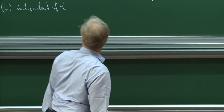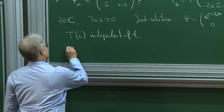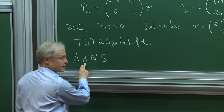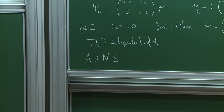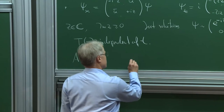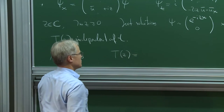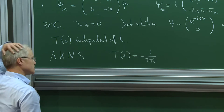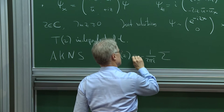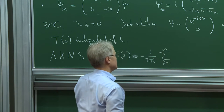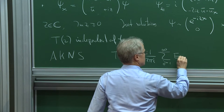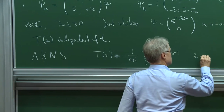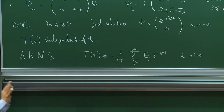This goes back to Ablowitz, Kaup, Newell, and Segur — the AKNS system. They did it for the nonlinear Schrödinger equation. There is an expansion of T(C), which is equal to minus 1 over 2πi times a formal sum of energies E_j · C^{−j−1}, as C tends to i∞. This is the Laurent series at infinity.